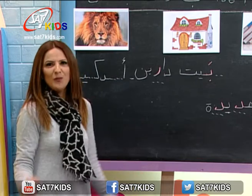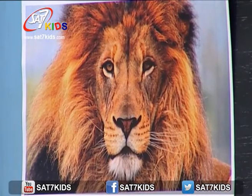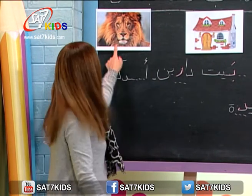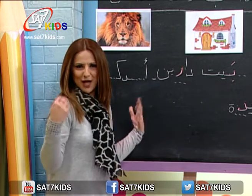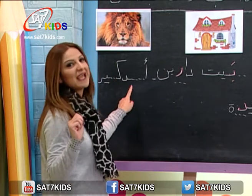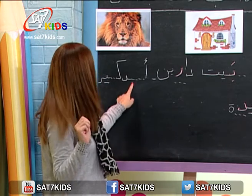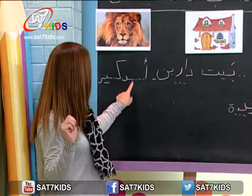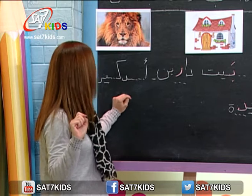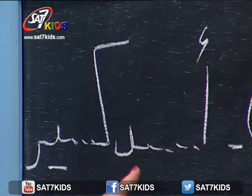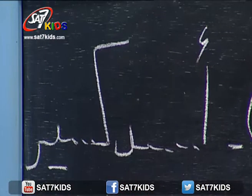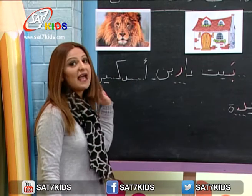وآخر صورة: صورة حيوان أنا كتير بحبه. شو هو؟ تطلعوه كتير منيح. هو ملك الغابة، حيوان كتير قوي. صح، هو الأسد. ومنه أسد صغير؟ لا، هيدا أسد كبير. هلأ نشوف شو ناقص بكلمة أسد. عندي آ وعندي دال بآخر الكلمة، والحرف بالنص بوسط الكلمة ناقص.